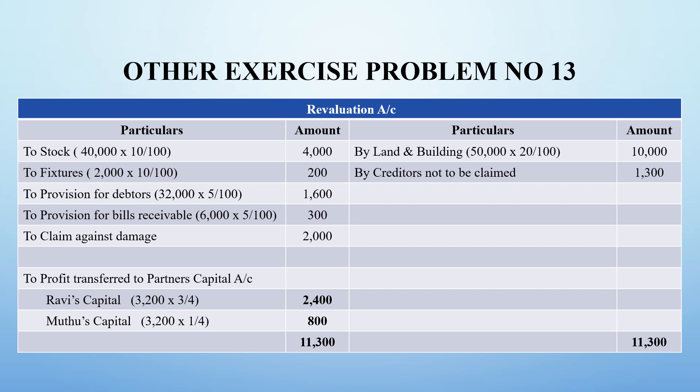The balancing figure on the debit side is Rs. 3,200, which represents revaluation profit. This profit is shared by the old partners in their old profit-sharing ratio of 3:1. So Ravi gets Rs. 2,400 and Muthu gets Rs. 800. The total on both sides of the revaluation account is Rs. 11,300.